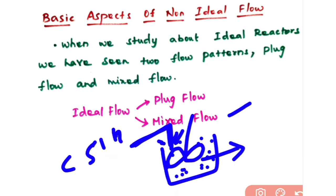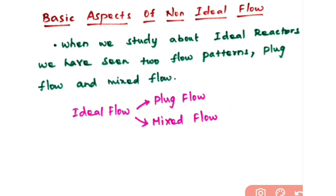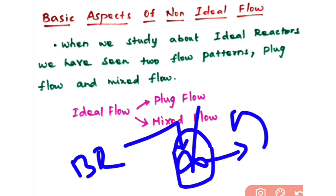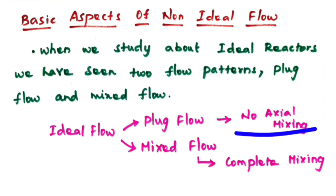In a continuous stirred tank reactor, there is continuous entering of reactant and withdrawing of product from the reactor, and there will be complete mixing inside the reactor. This is known as mixed flow. In a batch reactor, it is a closed system. Here also you have complete mixing inside the reactor, but once the reaction is complete after a particular time interval, you will take out the product. So in a batch reactor you also have mixed flow, that is complete mixing inside the reactor. In plug flow there is no axial mixing, and in mixed flow you have complete mixing of reactants inside the reactor.